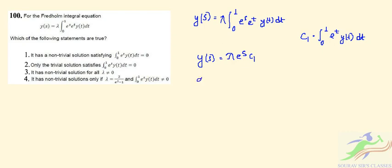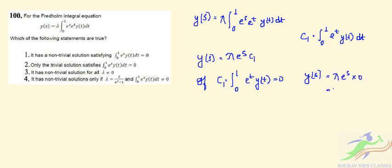If c₁ = 0, meaning the integral ∫₀¹ e^t · y(t) dt = 0, then y(s) = λ · e^s · 0 = 0. So option 1, which claims a non-trivial solution exists in this case, is false. Option 2, which says there is only the trivial solution when c₁ = 0, is correct.